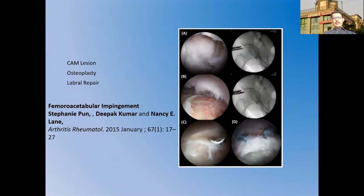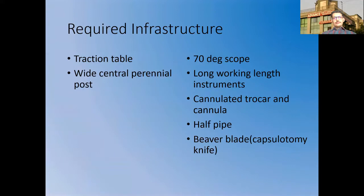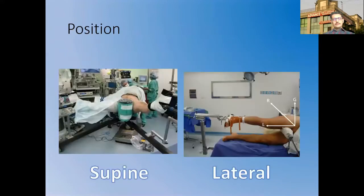This is a variant of cam lesion in which an osteoplasty has been done along with a labral repair. In the Indian perspective, FAI is less common and synovial pathologies become more common indications. Tuberculosis in its active stage is a good indication with both diagnostic and therapeutic roles. The required infrastructure for hip arthroscopy includes a traction table, a wide central perineal post, a 70-degree arthroscope, long working-length instruments, cannulated trocar and cannula, half pipes, and a beaver blade — also called a capsulotomy knife.